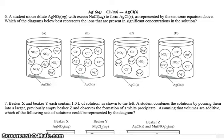So here we have a student mixes dilute silver nitrate with excess sodium chloride to form silver chloride and actually they give you the net ionic equation for the precipitation. Which of the diagrams below best represents the ions that are present in significant concentrations in the solution? So what we see is we see that each one of these have some silver chloride at the bottom of the beaker which makes sense because silver chloride is the precipitate formed.